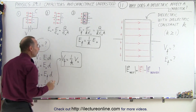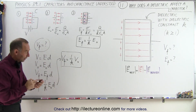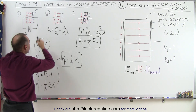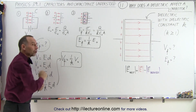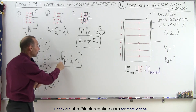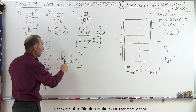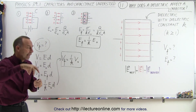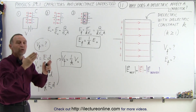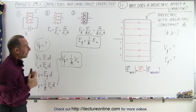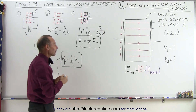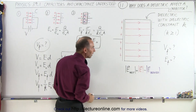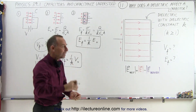In other words, the final voltage across the capacitor — and remember, it's no longer connected to the battery, otherwise the battery could pump in more charges and keep the voltage the same — but since it's no longer connected to the battery, the final voltage between the plates is now one over k times the initial voltage. So by inserting a dielectric, you're reducing the voltage between the plates, and therefore the capacitance and the energy will also change when we insert a dielectric.